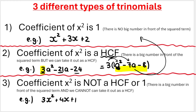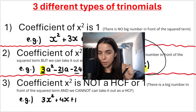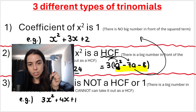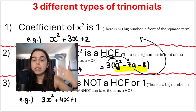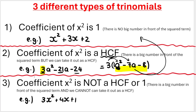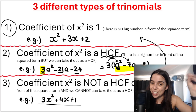The third type is something that you learn from grade 10 onwards, and it is where the coefficient of x squared is not a highest common factor and it's not one. In this example, you can see the squared term x squared has a three in front of it. Unlike the previous example, we cannot take three out as a highest common factor — three cannot divide into four, nor can it divide into one. You have to apply a completely different method. But in this video, what we're going to be practicing is the first type of trinomial, which is the most basic. It's the type you absolutely need to master before you can do any of the others.